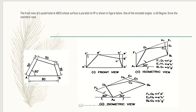Now, measure F'D' and transfer it to F1D1 to get point D1, then join A1D1. Next, measure E'H' and transfer it as E1H1. Similarly, measure E'G' and transfer it as E1G1. Then drop a vertical line and a horizontal line — the coinciding point will be your C1. Thus we have got C1. Now join A1D1, then D1C1, then C1B1. This is the vertical isometric view.